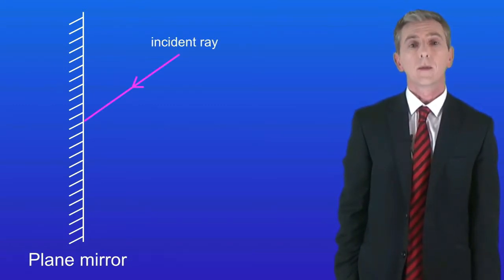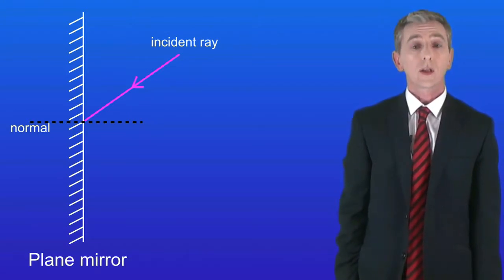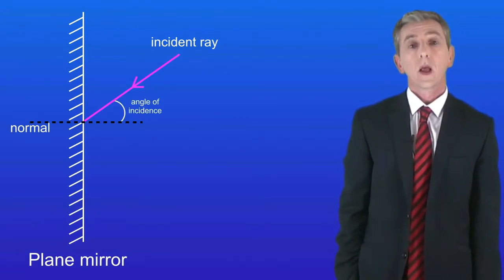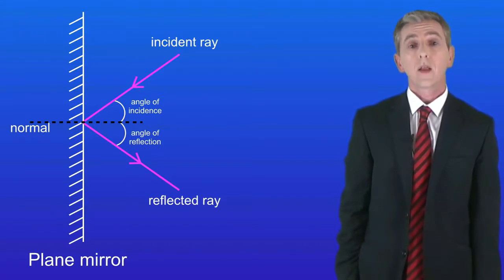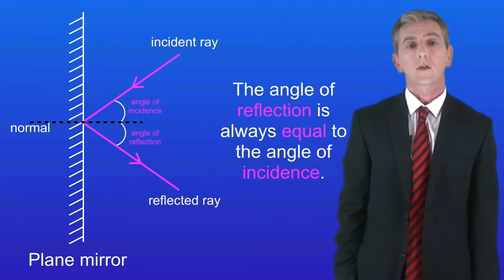Imagine a ray of light hitting a plane mirror — the incident ray. First we draw an imaginary line at right angles to the mirror, called the normal, which we use to work out angles. The angle between the incident ray and the normal is called the angle of incidence. The ray reflects off the mirror as the reflected ray, and the angle between the reflected ray and the normal is the angle of reflection. The angle of reflection is always equal to the angle of incidence.